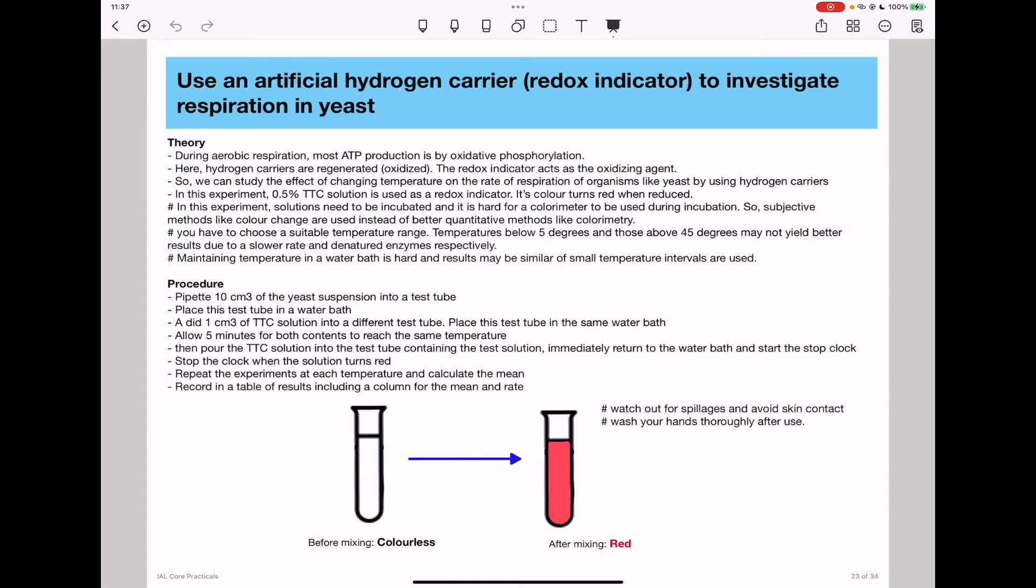In this experiment, we use an artificial hydrogen carrier, which is usually TTC solution. We need to know that most ATP is produced during aerobic respiration through oxidative phosphorylation. So if we use a redox indicator like TTC solution, it is going to be reduced, and then we'll be able to observe the color change.